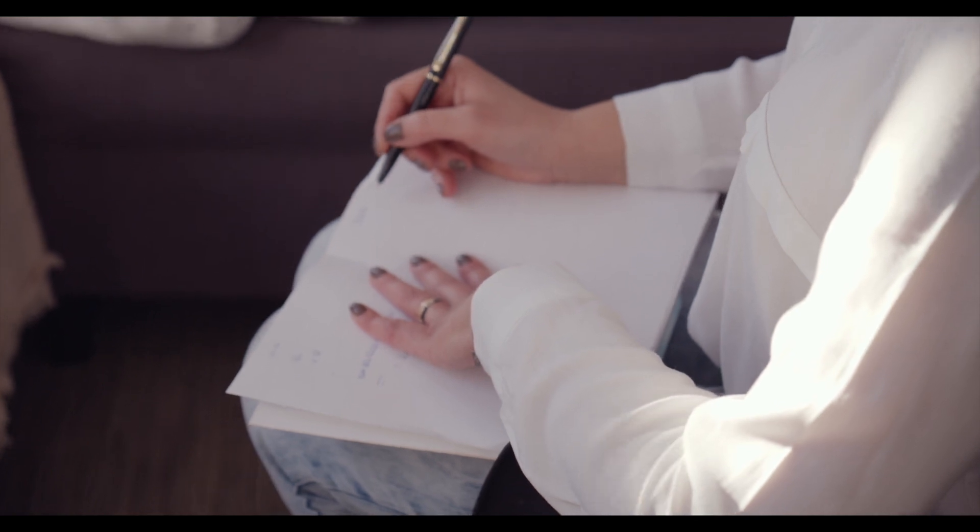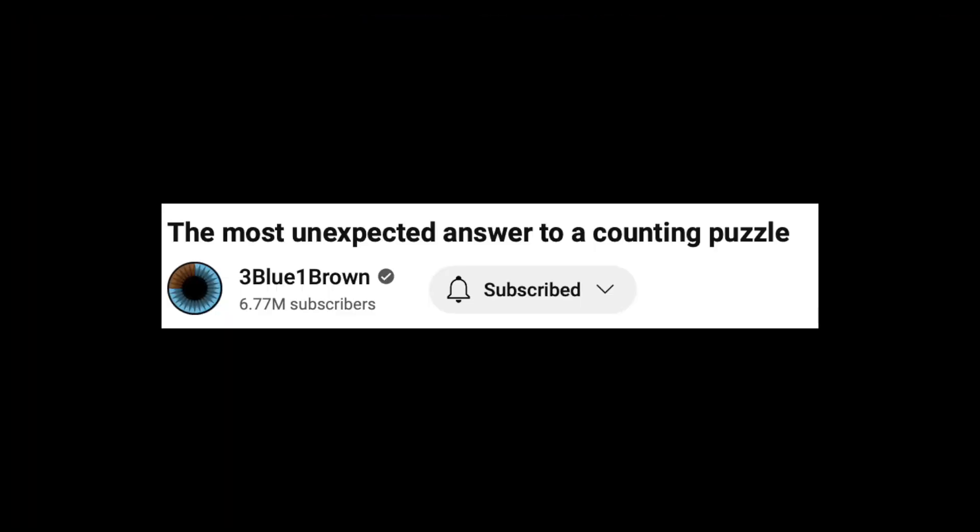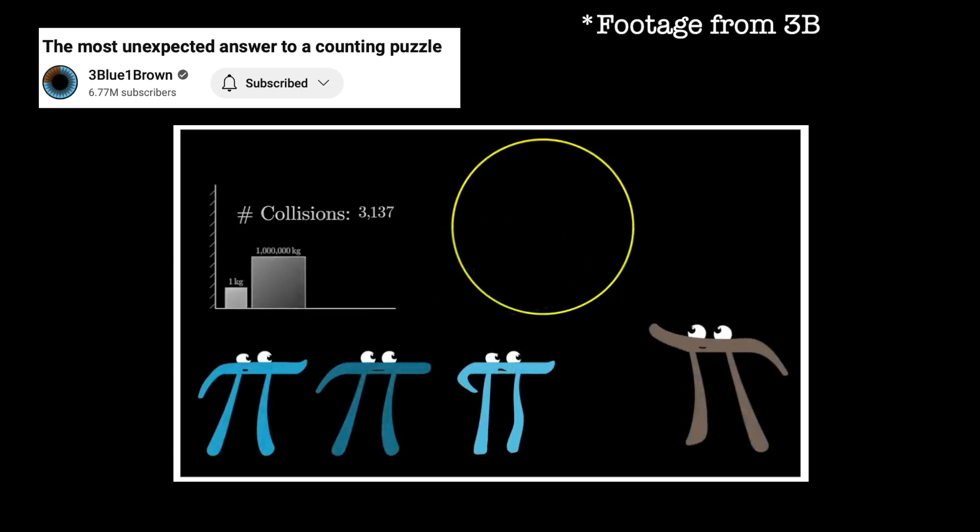The question ends here, but the meaning of this equation doesn't. Something I learned from 3 blue 1 brown is that when there is a pi, there is a circle. So this expression has something to do with circle.